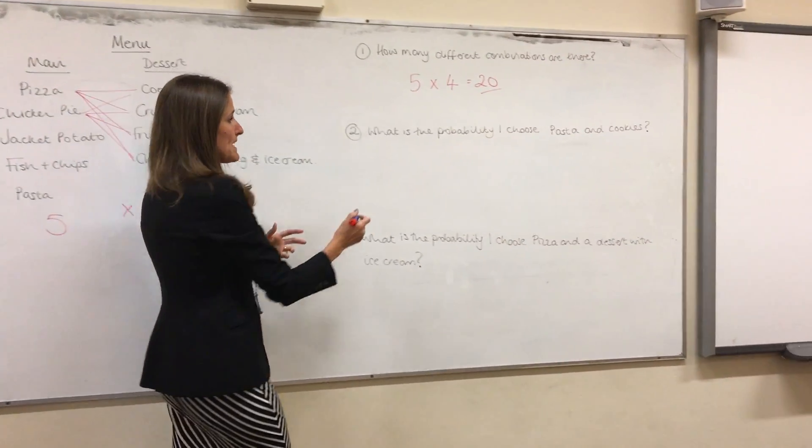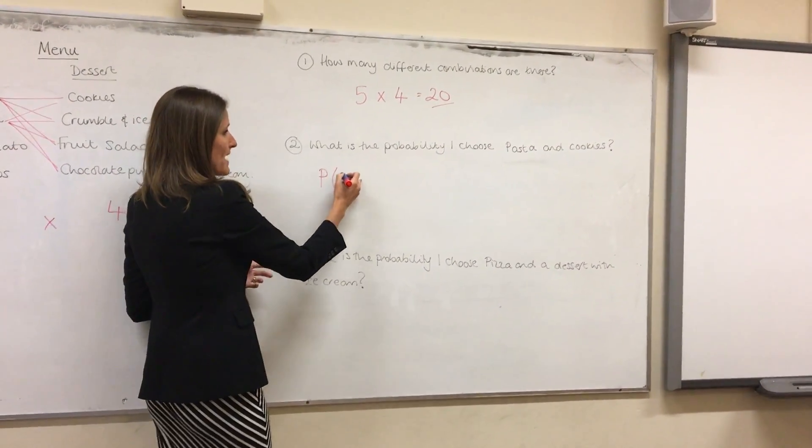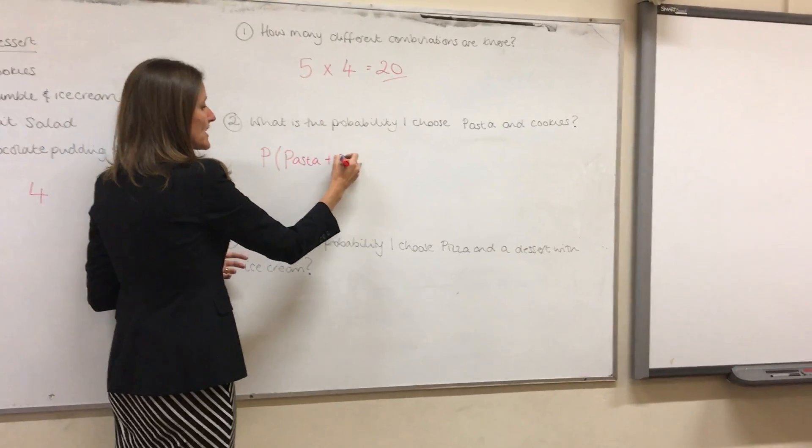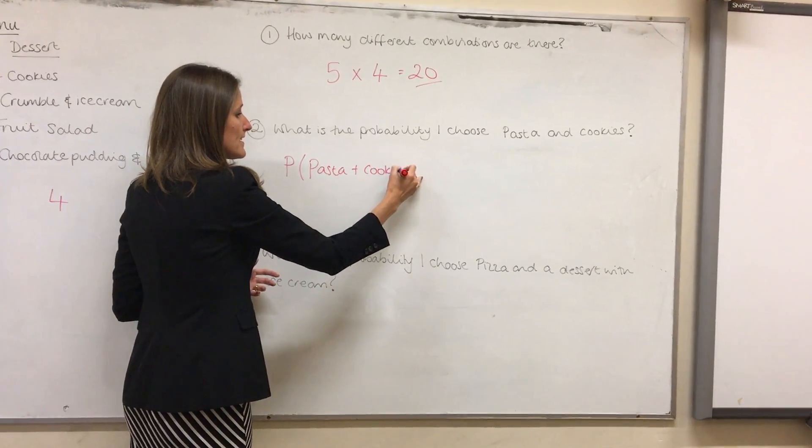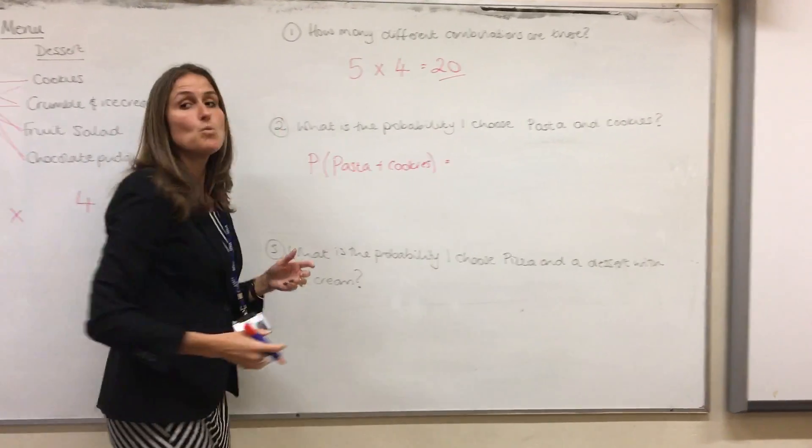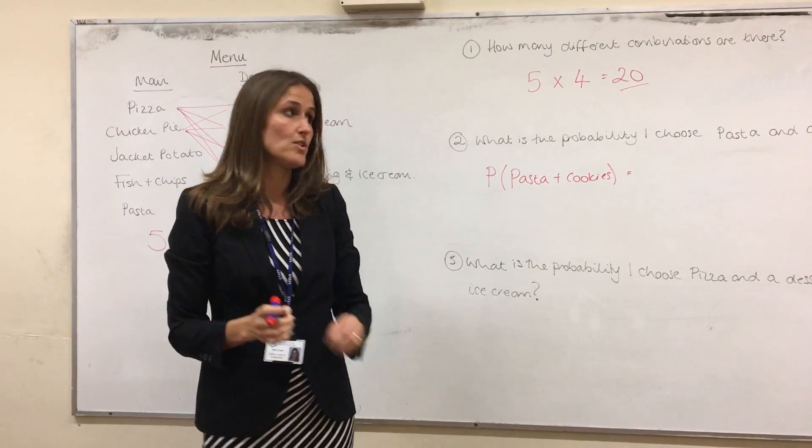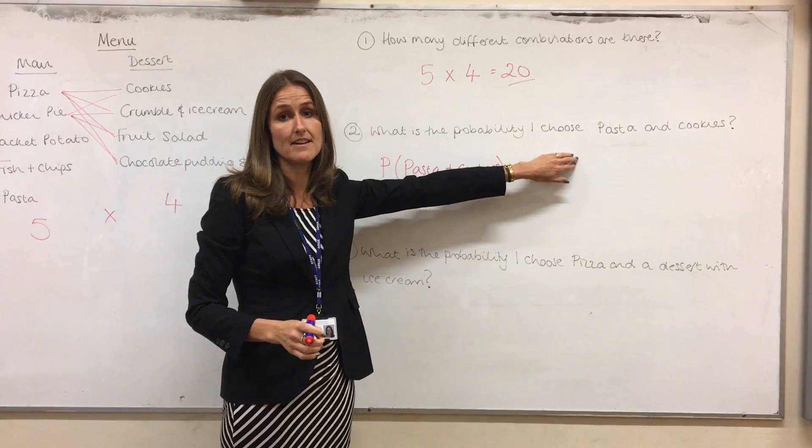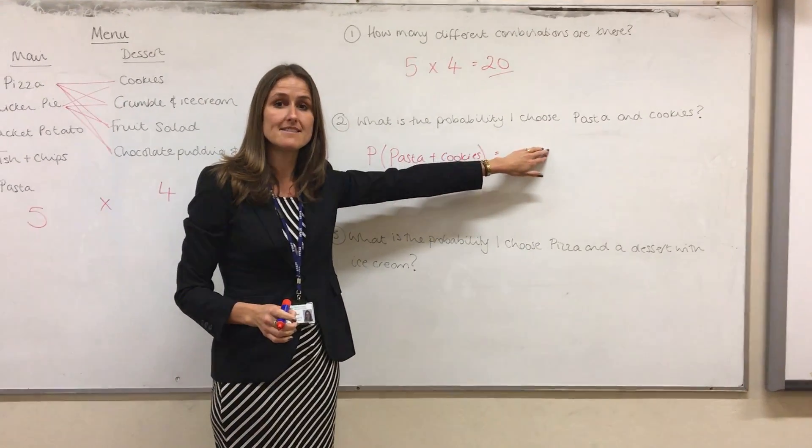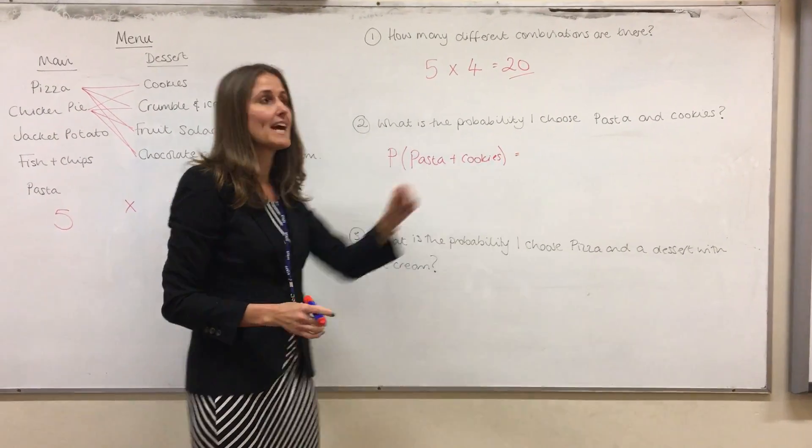When we're doing probability, we're going to work out the probability of having pasta and cookies. What you always want is on the top, the numerator, you want how many ways can that happen? Okay?